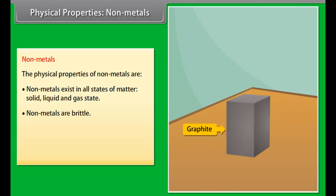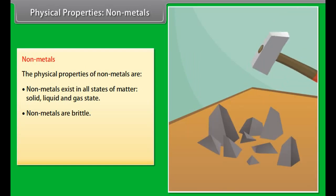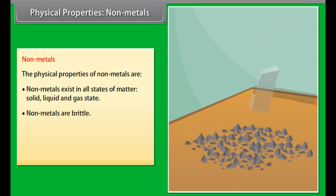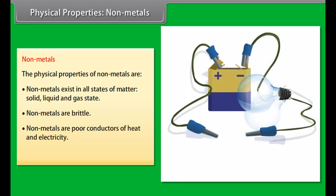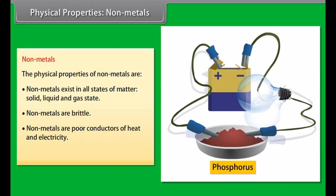Non-malleable and non-ductile. Non-metals are brittle and cannot be rolled into wires or beaten into sheets. Poor conductors of heat and electricity. Non-metals are poor conductors of heat and electricity. Graphite carbon is an exception as it is a good conductor of electricity and is used in making electrodes. Lustre: Non-metals have no metallic lustre and do not reflect light.